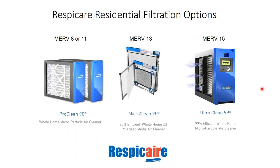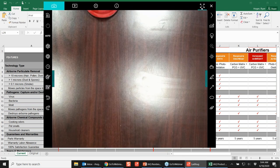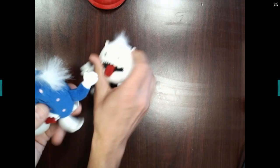RespiCare also has a MERV 13 option in a one-inch enclosure — which is exciting because one common objection to offering MERV 13 is that the return drop is too close to the furnace to fit a thick filter, and there's no time or budget to move the ductwork. This solves that problem: MERV 13 filtration in a one-inch form factor.